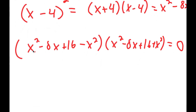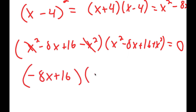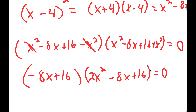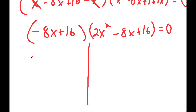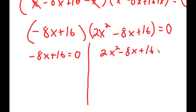So I get x squared minus 8x plus 16 minus x squared, times x squared minus 8x plus 16 plus x squared, and this is equal to 0. Let me simplify this: x squared and negative x squared cancel out, so I get negative 8x plus 16 times 2x squared minus 8x plus 16 is equal to 0. This gives me two equations: negative 8x plus 16 is equal to 0, and 2x squared minus 8x plus 16 is equal to 0.